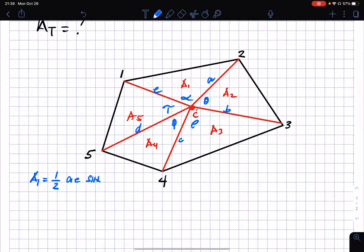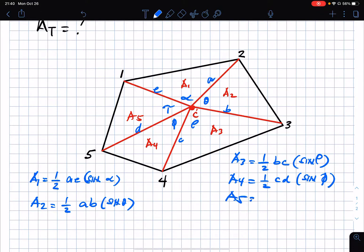So area one will now be one half a times e multiplied by sine alpha. Area two is one half a times b sine theta. Area three will be one half b times c sine rho. Area four is one half c times d sine P. And area five will be one half d times e sine tau.